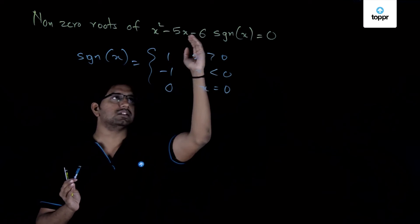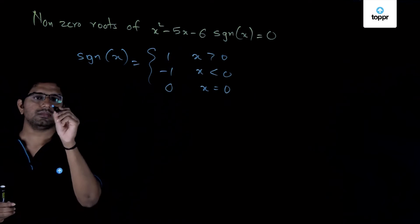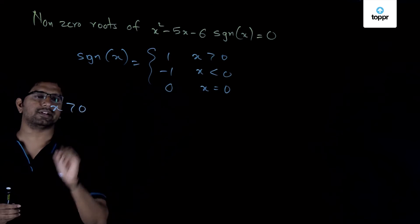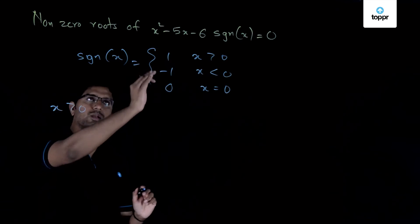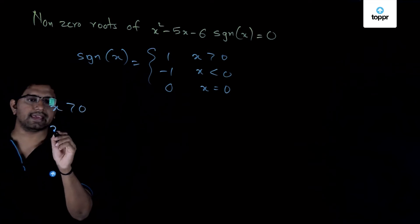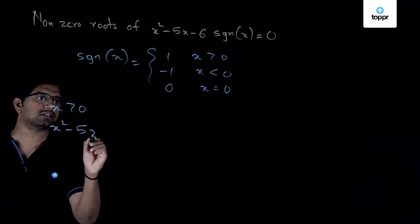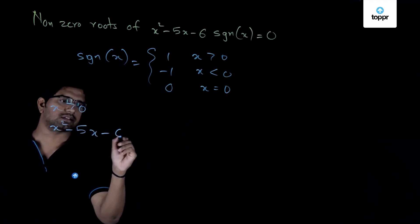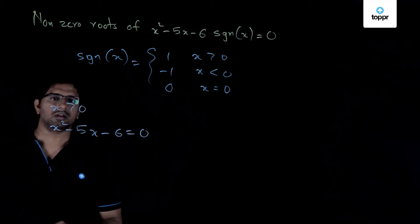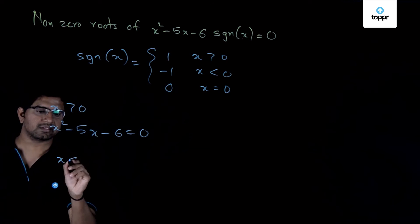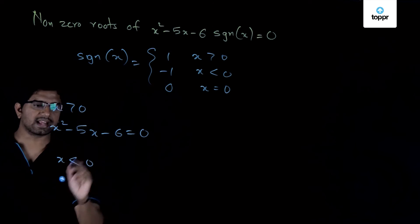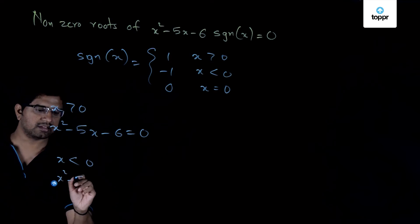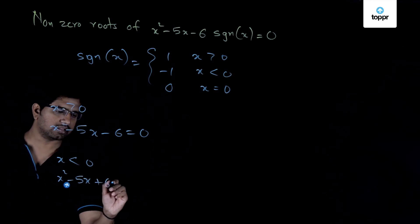So when x is positive, then what we are looking at is the quadratic equation x square minus 5x minus 6 equal to 0. And when x is negative, then we are looking at the quadratic x square minus 5x plus 6 equals 0.